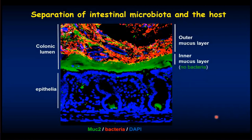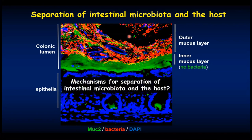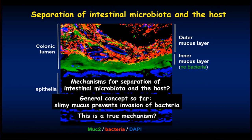When we stain the microbiota and Muc2 mucins in the mouse colon, the stained microbiota are abundantly present in the outer mucus layer regions. But in the inner mucus layers, visualized with Muc2 mucins, these inner mucus layers are essentially free of microbiota. Thus, by the presence of this inner mucus layer, microbiota is separated from the host cells. The general concept accepted so far was that because mucus is slimy, it mechanically prevents the invasion of microbiota.